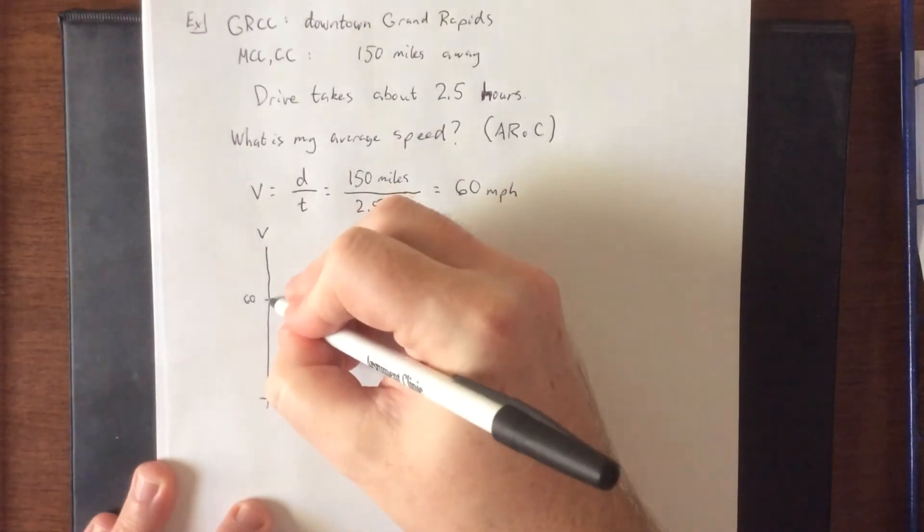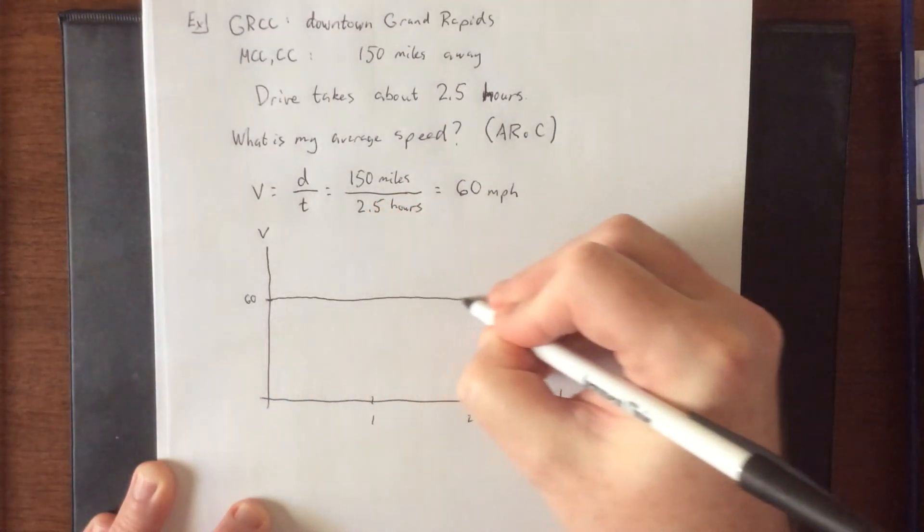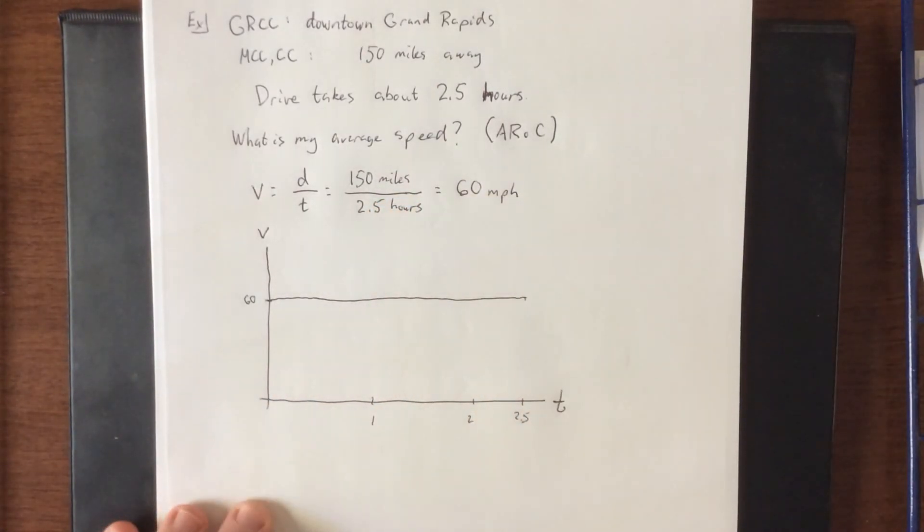So the average speed is letting me know that that is what my trip would have looked like had I just decided to do 60 miles an hour the entire time. But I can pretty much guarantee you that's not at all what the trip is going to look like. First off, I'm starting from a parked car, so I'll be doing zero miles an hour.